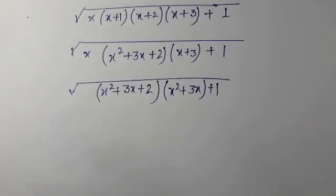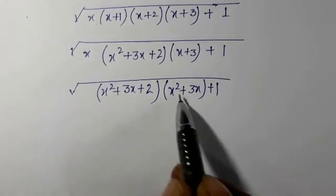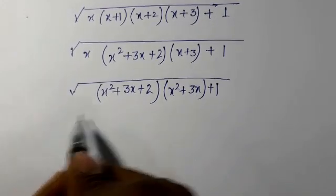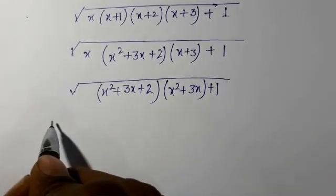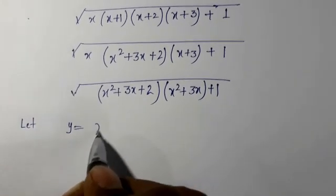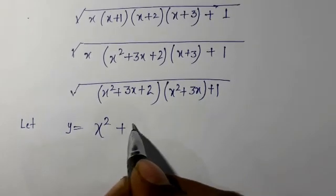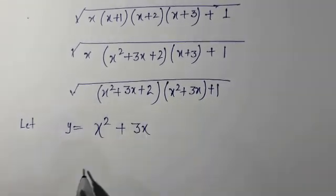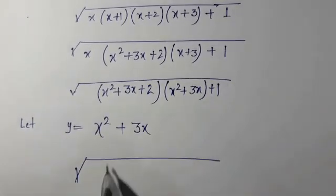Now I can take x²+3x as y. So let y = x²+3x, and I am putting it over here, so it is (y+2)(y+1).